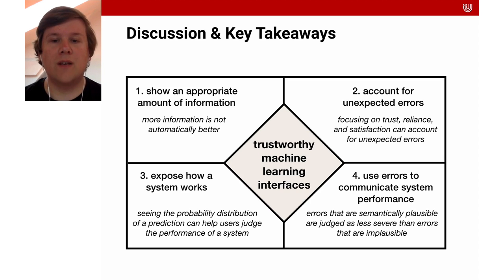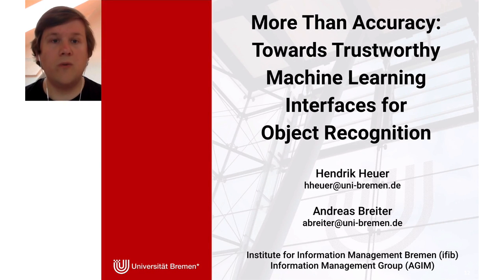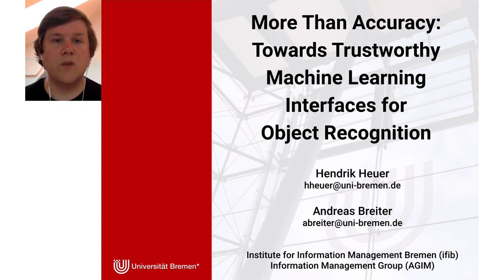Plausible errors could increase trust in the system, while implausible errors could lead to distrust. The objective function of a neural network could be adapted to penalize errors that users regard as implausible and reward errors that users perceive as plausible, conveying system accuracy through the predictions themselves. Thank you very much for your attention. You'll find more information in the paper 'More Than Accuracy: Towards Trustworthy Machine Learning Interfaces for Object Recognition.' All the best from Bremen, Germany.